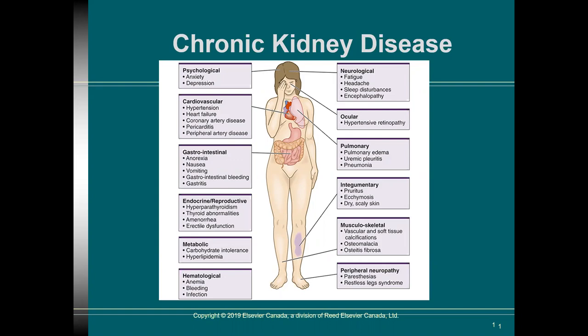Starting on the right and moving to the left, from a neurological perspective we see symptoms such as fatigue, chronic headaches, and very devastating sleep disturbances, as well as encephalopathy — where you have confusion because of buildup of nitrogenous ammonia waste and other uric acid waste. Ocular symptoms include hypertensive retinopathy, which is a threatening vision condition. Pulmonary symptoms include pulmonary edema — because kidneys are not able to process waste and produce urine, you can have a backup of fluids leading to pulmonary edema — as well as uremic pleuritis, an inflammatory process in the lungs caused by excess urea, and even pneumonia.